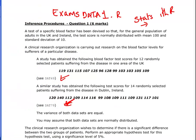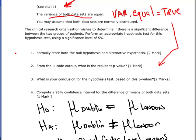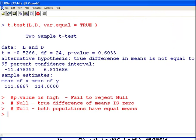Looking at the questions: first, formally state the null and alternative — we have that done. Second, what is the resultant p-value? Remember, the variance of both data sets is assumed equal, so we needed var.equal=TRUE. If you missed that, you would have gotten the wrong p-value. The correct p-value is 0.6033.